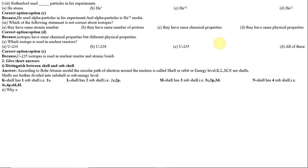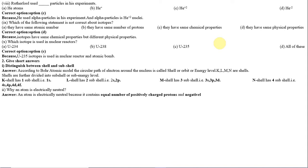Number 2: Why is an atom electrically neutral? An atom is electrically neutral because it contains an equal number of positively charged protons and negatively charged electrons. The positive charge of protons and the negative charge of electrons cancel out, making the atom electrically neutral.